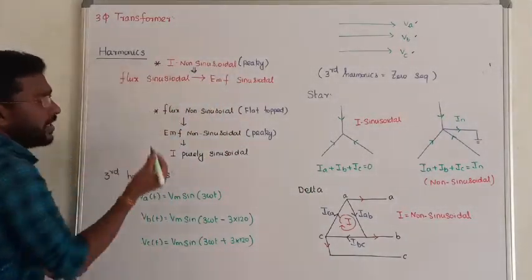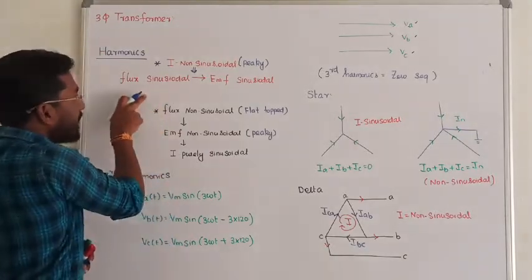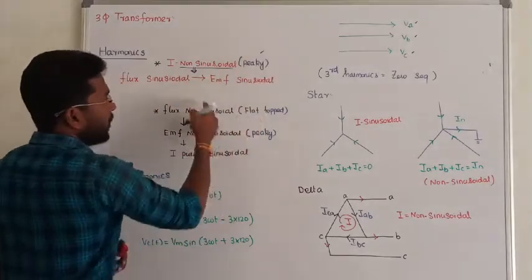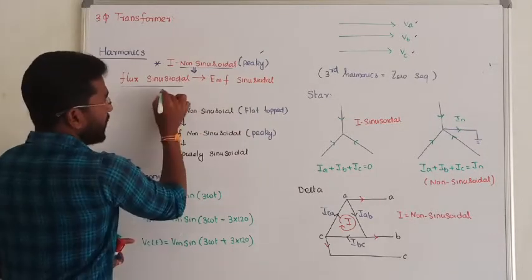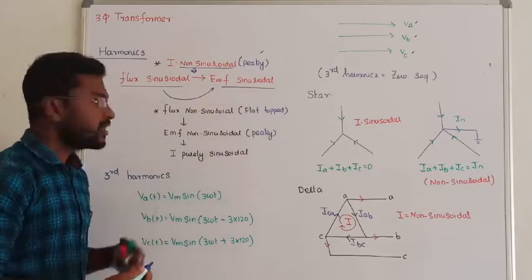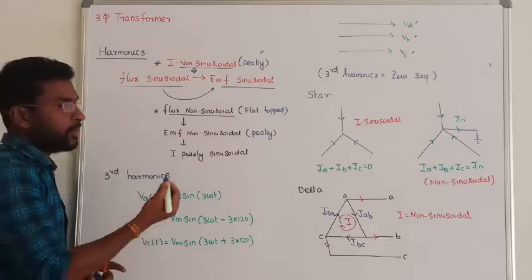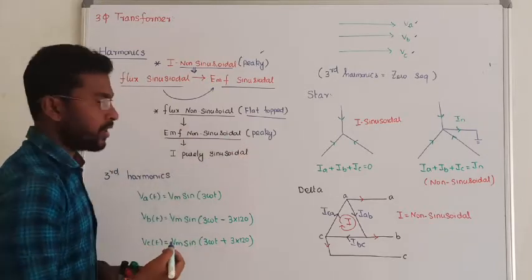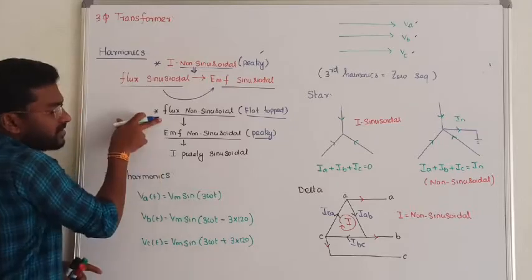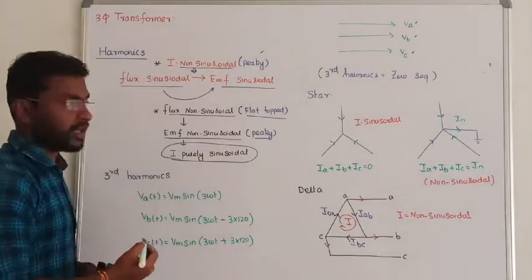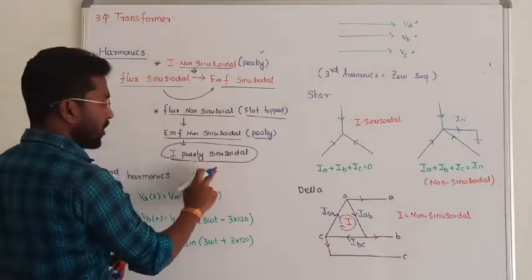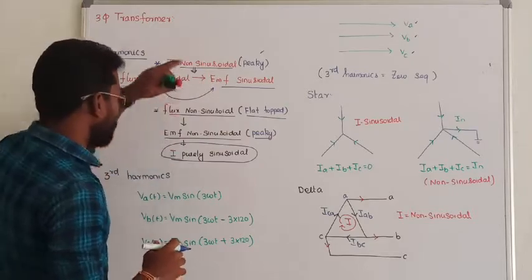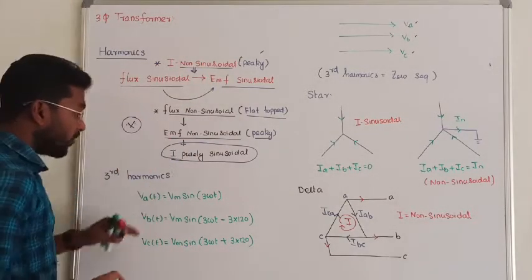Let us see the effect of third harmonics. In single-phase transformers, when analyzing the properties of harmonics: Case 1 — if the current is non-sinusoidal, the flux will be purely sinusoidal, and the EMF generated will be purely sinusoidal. Case 2 — if the flux is non-sinusoidal (flat in nature), the EMF generated will also be non-sinusoidal and peaky in nature, while the current is purely sinusoidal. Don't forget these two things — they are very important.